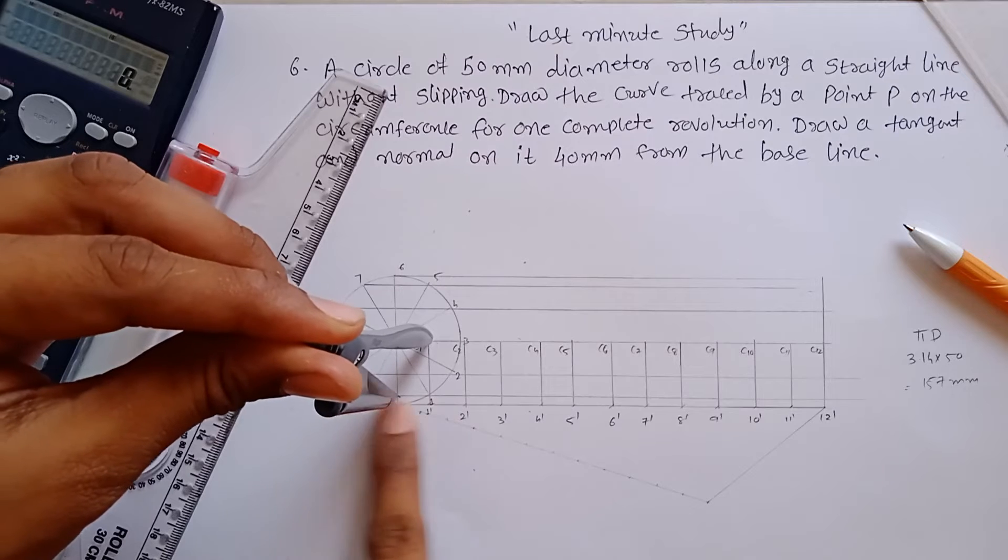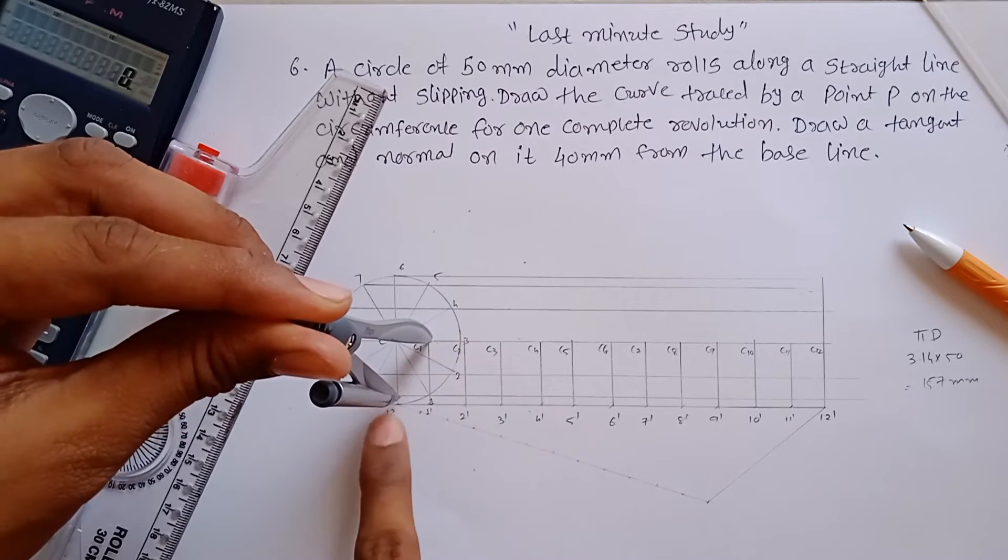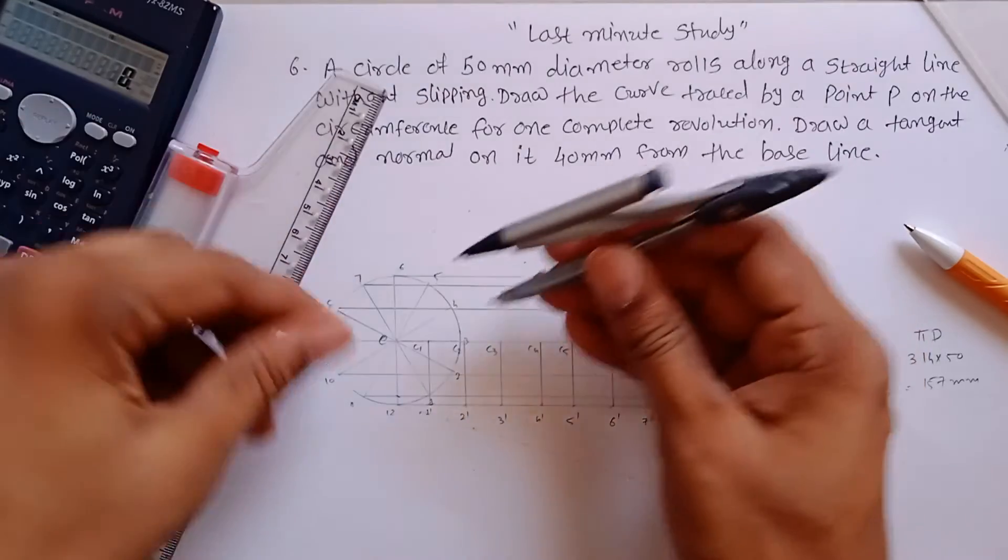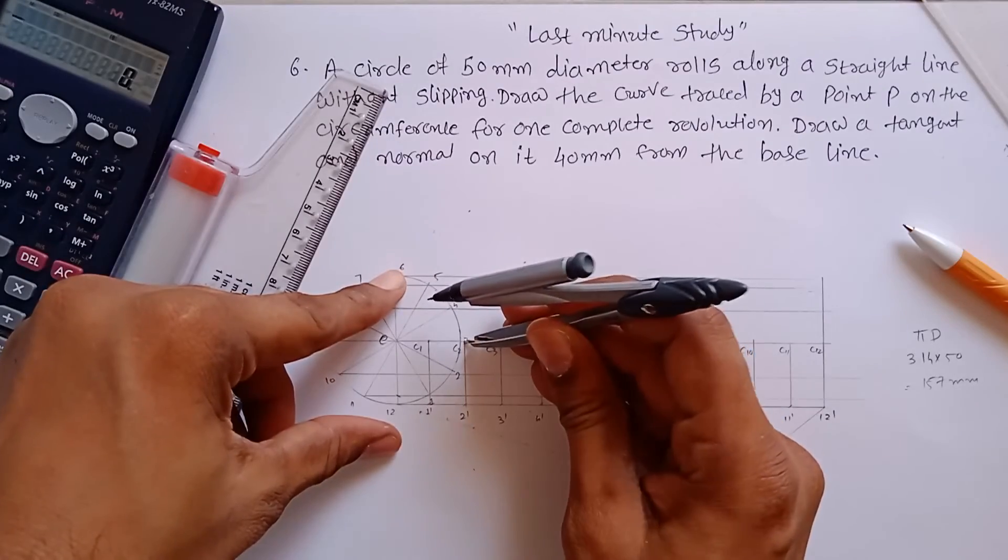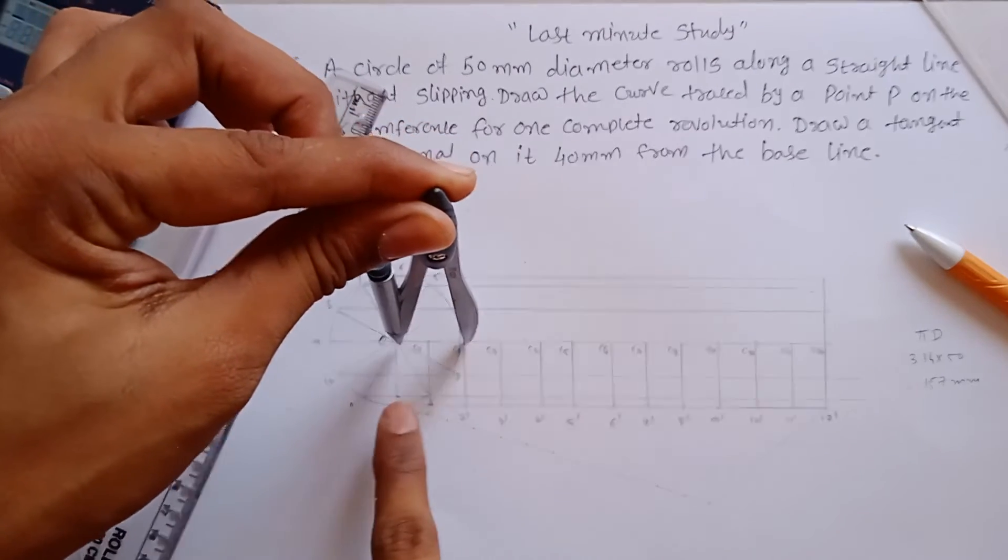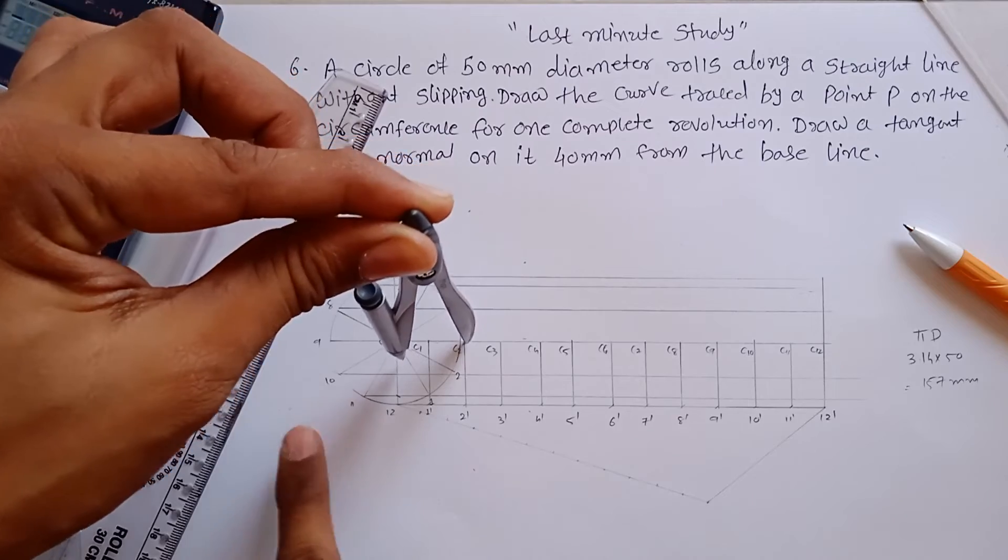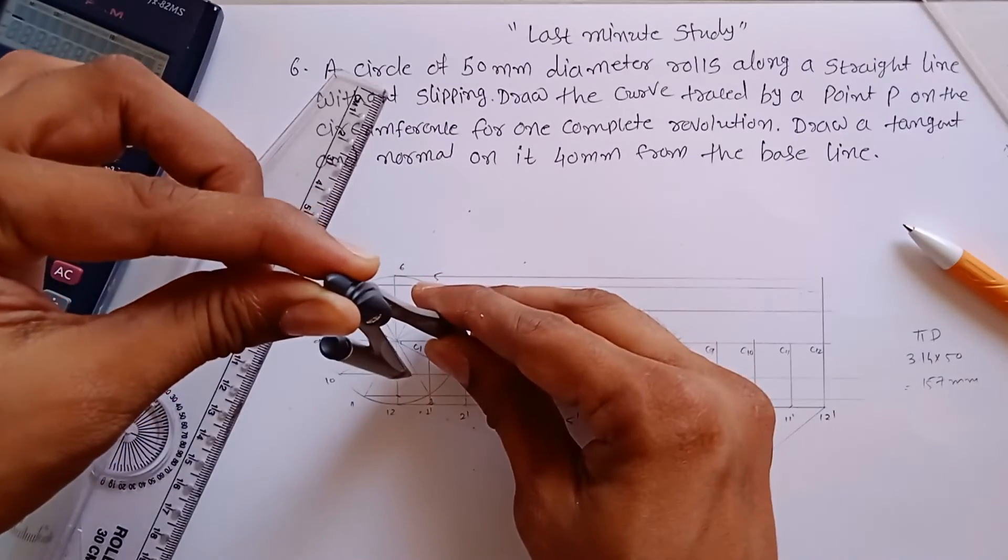You have to transfer the point C1 from 1. Now put point on C2, and you have to make an arc on the line passing from 2 and 10, which is over here somewhere like this.